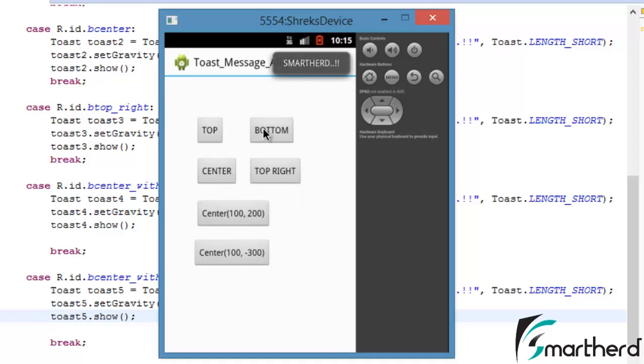Now the top right. Now the center with deviation 100, 200, we are able to see the Toast message right here because both are positive, the Toast will be printed in the fourth quadrant.